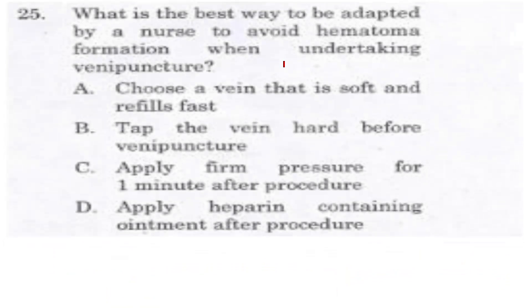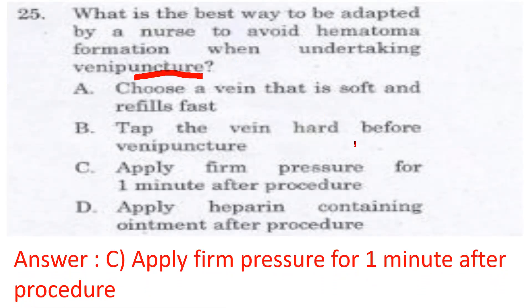What is the best way to be adopted by a nurse to avoid hematoma formation when undertaking venipuncture? Option A: choose a vein that is soft and refills fast. Option B: tap the vein hard before venipuncture. Option C: apply firm pressure for one minute after the procedure. Option D: apply ointment-containing gauze after procedure. The answer is C — apply firm pressure for one minute after the procedure.